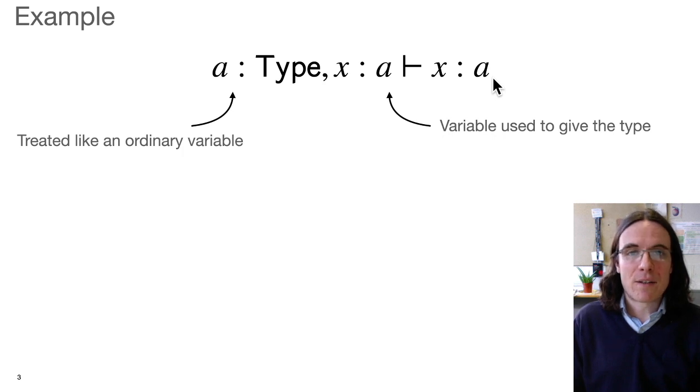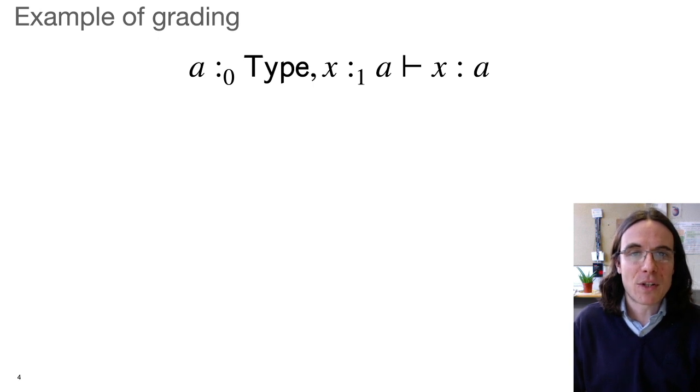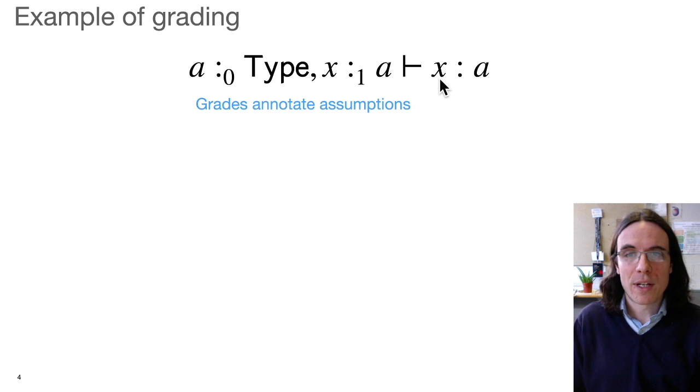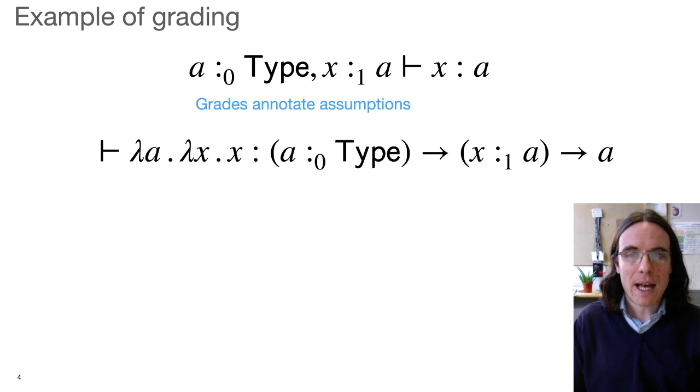Now in existing graded type systems, the idea is that we take a type theory like this and we add information that tells us about how variables are used. So one particular approach would assign to X the grade one, which means that X is used once in this subject and A is given the grade zero, meaning it's not used in the subject. So this captures how variables are used computationally. And then this pushes onto the binders. If we lambda abstract over A and X, then our type over here captures the grading that tells us how the parameters of this function are used computationally.